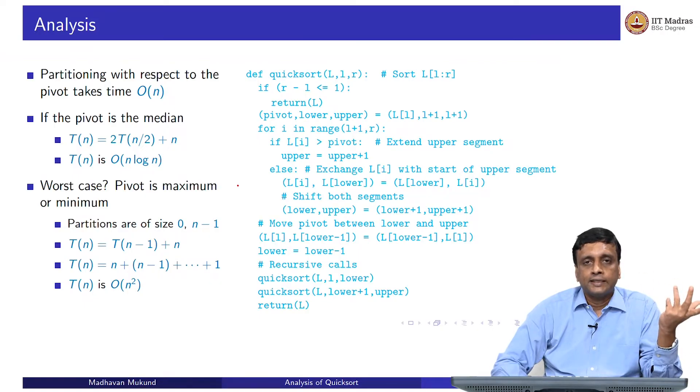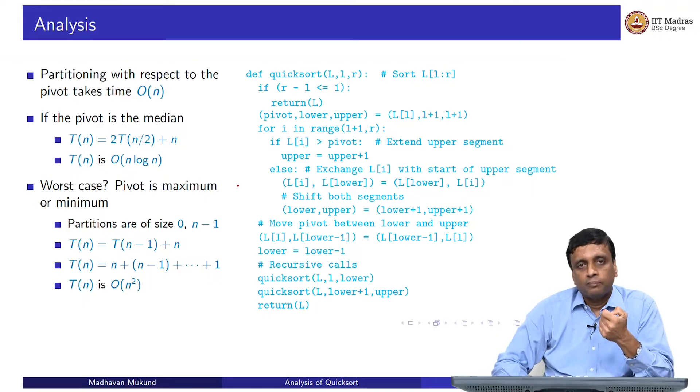One of the two partitions will have everything go into one part and nothing into the other. In the worst case, your partitions will have size 0 and n minus 1 instead of n/2, n/2. Of course, the pivot will not be there, so n will reduce in this very asymmetric way.